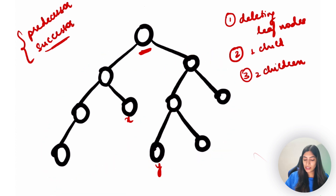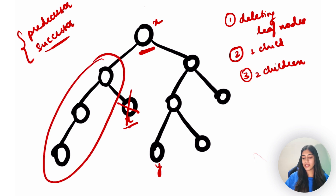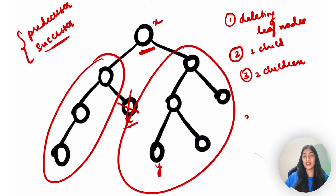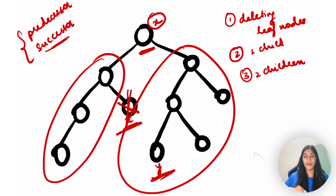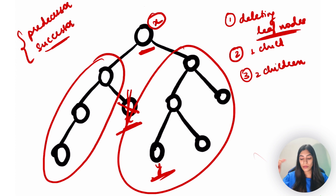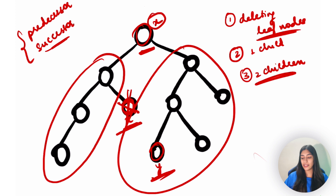Similarly, we could find the in-order predecessor. If I have to delete this, I assign the predecessor's value x over here and delete the predecessor node. This doesn't impact the rest of the tree because all values to the left are still less than x and all values to the right are still greater than x. I'm dividing the complex problem of deleting a node with two children into the simpler problem of deleting a leaf node.